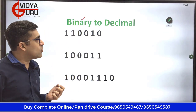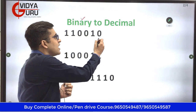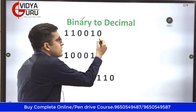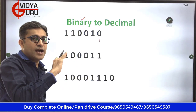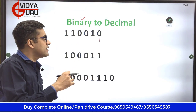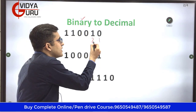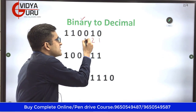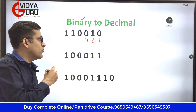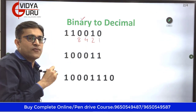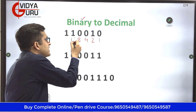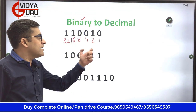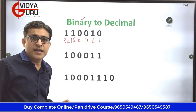Let's understand the trick. I am going to start from the right of the number. I am going to start writing from 1 and keep on doubling. So 1 becomes 2, below the next digit I write 2, I keep on doubling, so below the next digit I write 4 — the double of 2. Then I write 8, the double of 4. Then 16, then 32. I have started from 1 and kept on doubling.